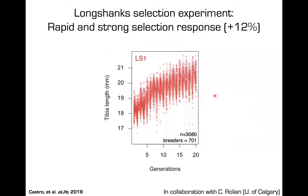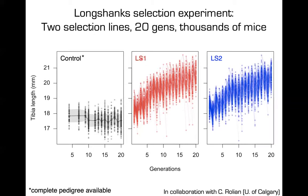The nice thing about this Longshanks selection experiment — the reason I was keen to collaborate with Campbell — was that he actually has all these mice in the freezer. You have the complete phenotype through the process and the pedigree relationship. You can go back and sequence the mice to figure out what exactly is going on. Even better, he hasn't just done this experiment once — he's done it three different times: two parallel selection replicates and one control experiment where mice were randomly chosen as breeders, showing no increase in tibia length over time.